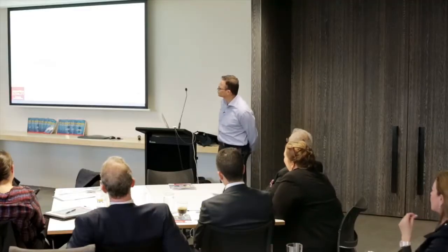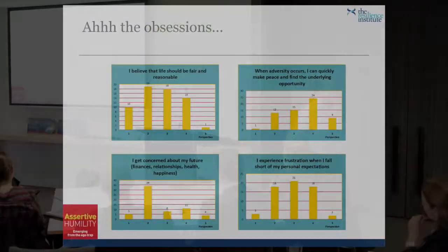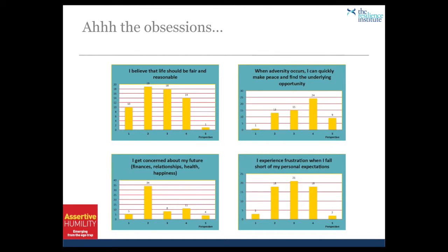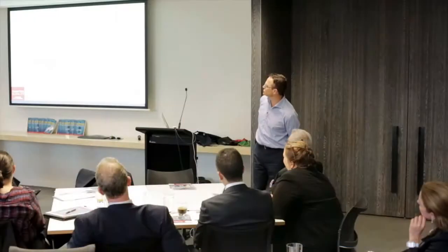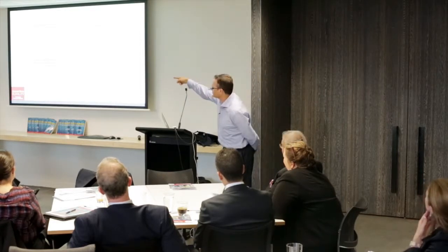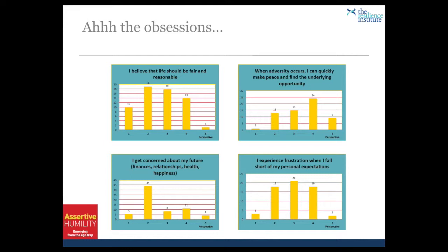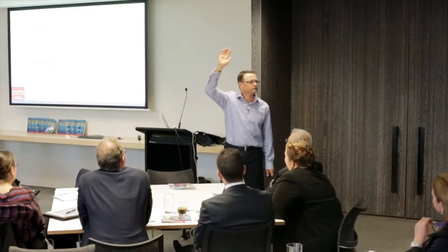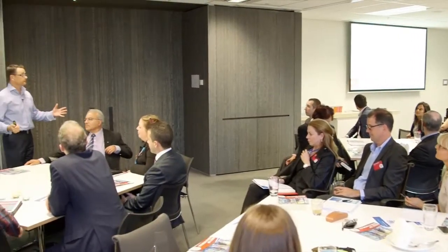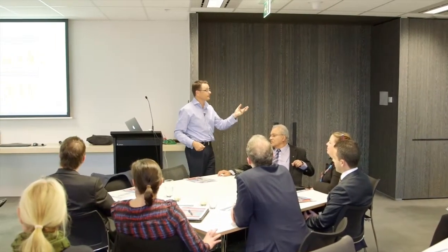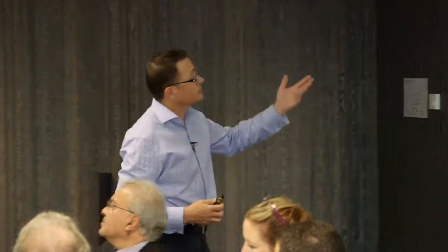Right-hand side: "I can quickly make peace when adversity occurs and see the underlying opportunity" — this is the choices model. "I get concerned about my future finances, relationships, health, happiness." Is that a reasonable result? 34 of you spend quite a lot of time worrying about the future. This is the challenge many of us face: how do I work through that in a resilient and assertively humble way — what can I control? How do I get the information I need and communicate with others? The extent to which I spend too much time worrying doesn't help anyway.